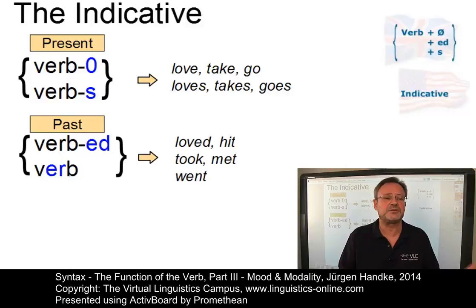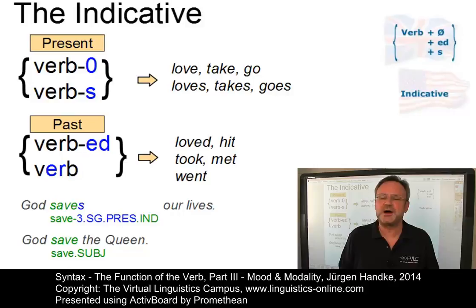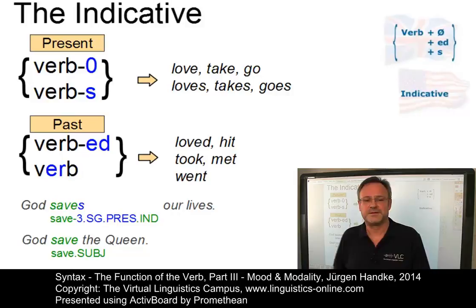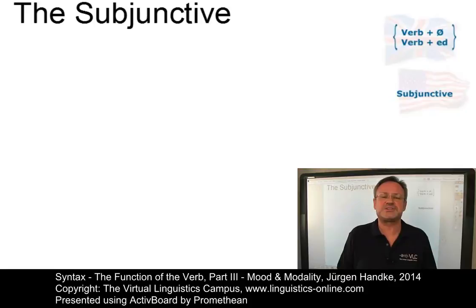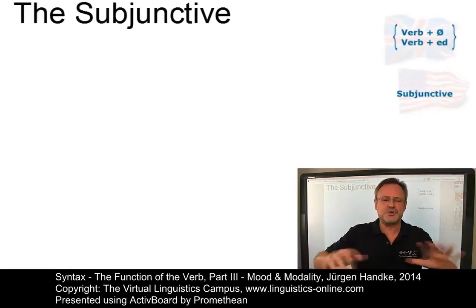The distinction between the indicative and the subjunctive mood is confined to those verb forms where inflectional differences can be found — for example, the third person singular present tense forms of 'be'. Compare: 'God saves our lives' versus 'God save the Queen.' The mere absence of the third person singular inflectional marker in 'God save the Queen' — which, as you all know, is part of the British national anthem — turns its verb into the subjunctive form. The subjunctive in present-day English is generally an optional and stylistically marked variant of other constructions. It is realized, like the imperative, by the base form of the verb. Thus, apart from the third person singular present tense and the indicative forms of 'be', there is no difference between subjunctive and indicative forms.